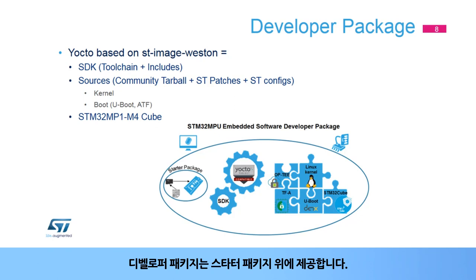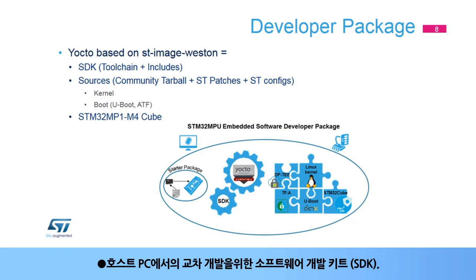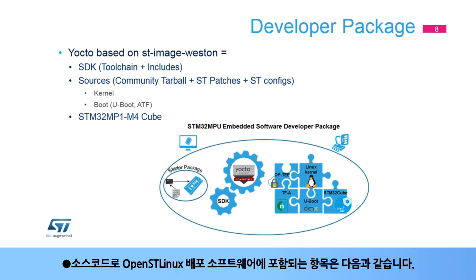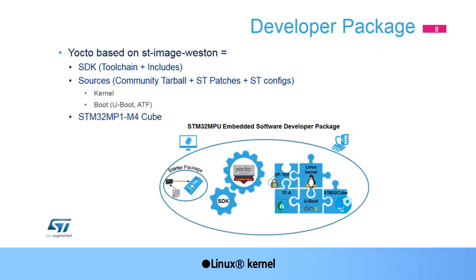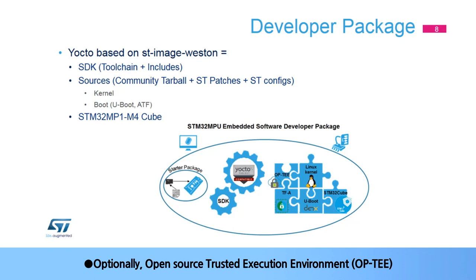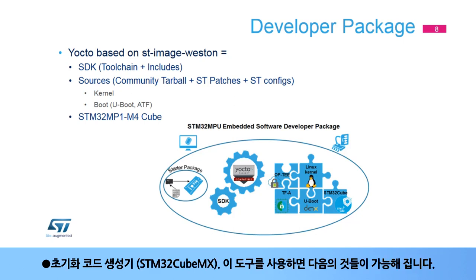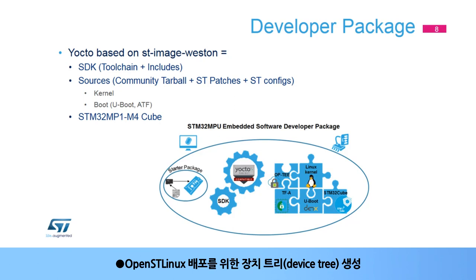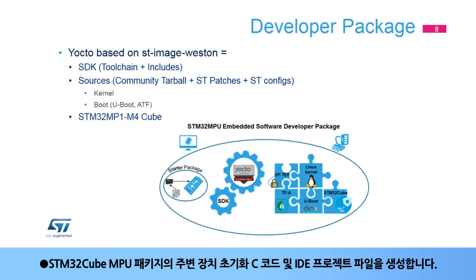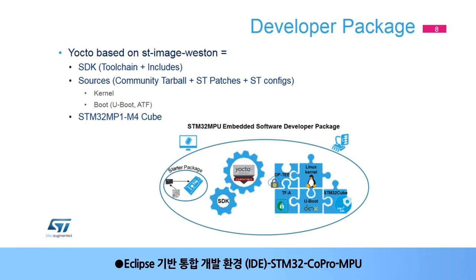The Developer Package provides, on top of the Starter Package, a software development kit (SDK) for cross-development on a host PC, along with the following pieces of OpenST Linux distribution in source code: U-Boot, Trusted Firmware-A (TFA), Linux kernel, and optionally Open Source Trusted Execution Environment (OP-TEE). It also includes the STM32MPU package in source code if the platform includes an ARM Cortex-M processor, an initialization code generator STM32CubeMX, and an Eclipse-based IDE, STM32CoproMPU.